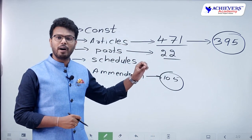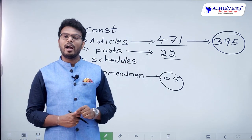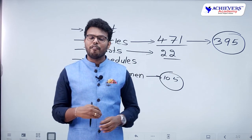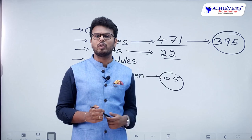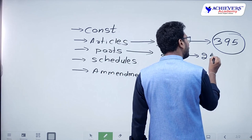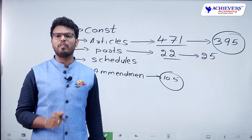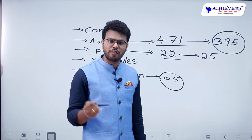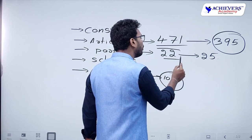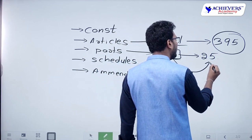Any article newly added gets attached to existing articles — for example as 14A or 15A — rather than being numbered 396, 397 and so on. Many aspirants wrongly believe articles go up to 400, but you will find no answer for 'what is article 400.' Similarly, at the beginning of the constitution there were 22 parts; if you count them the answer is 22, and the number beside them is also 22. But later new parts were added, increasing the total count to 25, even though the numbering still shows only 22.